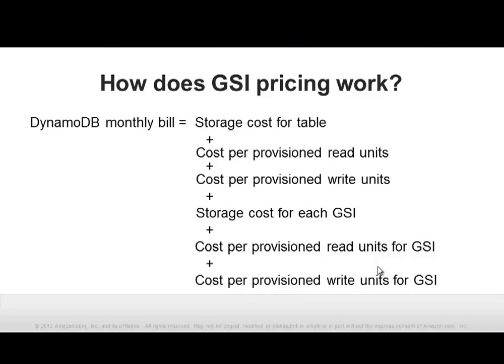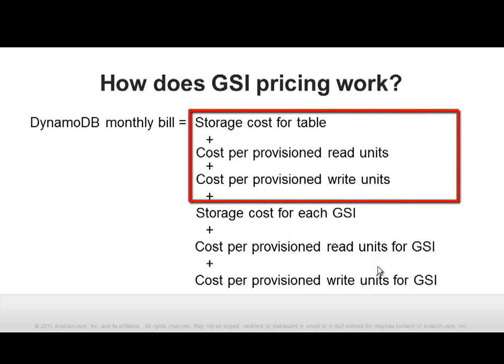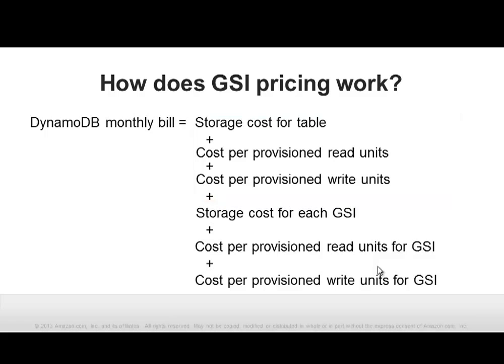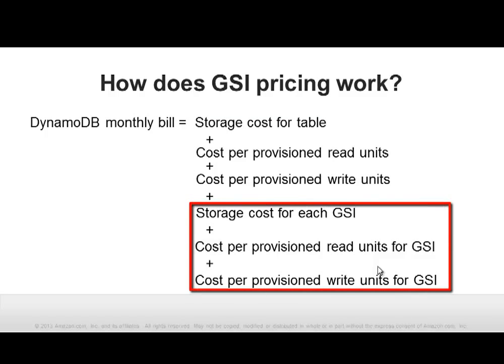Recall how pricing works for basic DynamoDB operations without indexes. Your monthly bill has three components: how much storage you consume, how many read capacity units you provision, and how many write capacity units you provision. Adding a global secondary index consumes additional storage. The more frequently your index attribute occurs in the base table, the more items your GSI will contain, and the more attributes you choose to project, the more storage space each item will take.